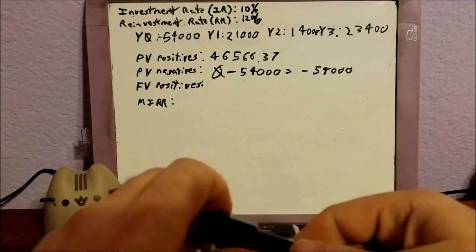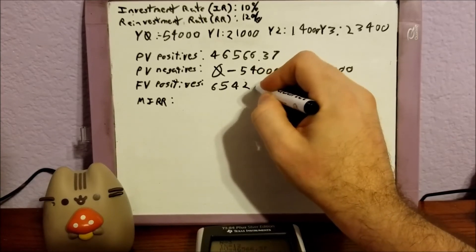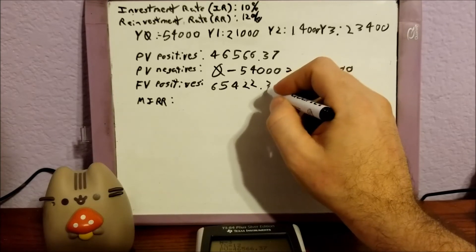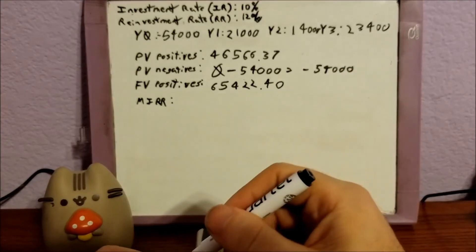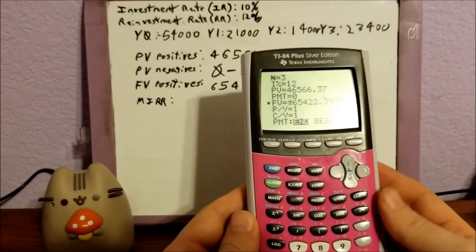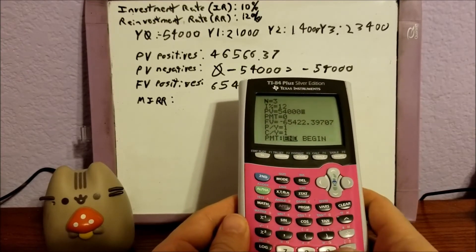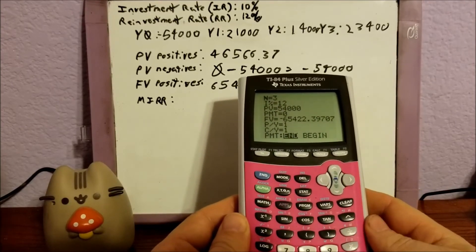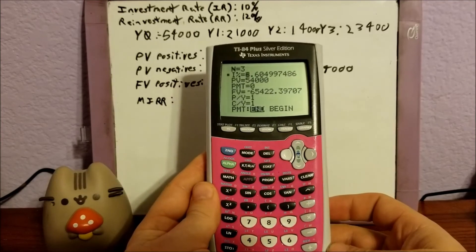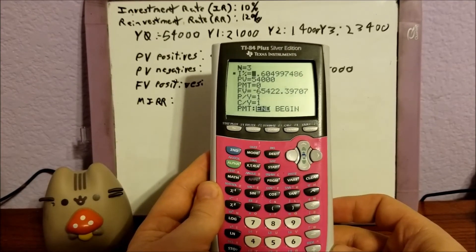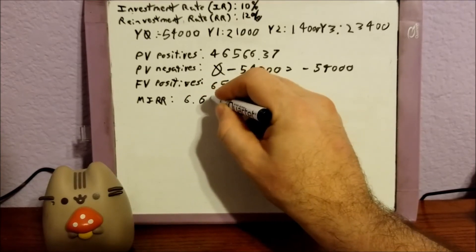So we have a future value of 65,422.40. We move up to our present value and plug in 54,000. Then we move up to our interest rate, hit alpha and solve, and that comes out to 6.6%. Which means our MIRR is 6.6%.